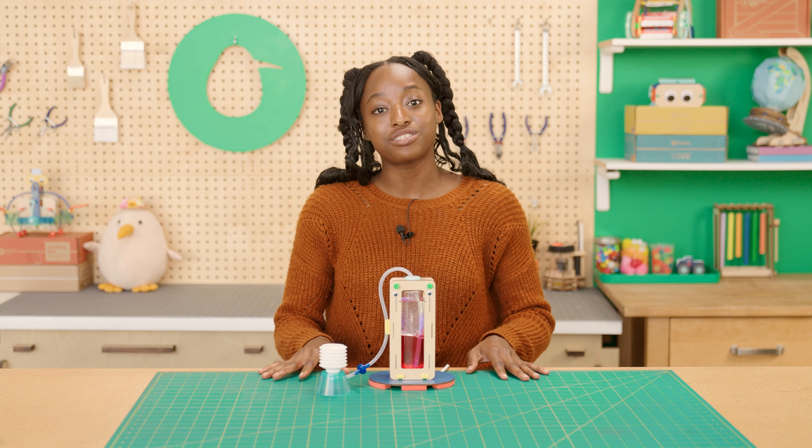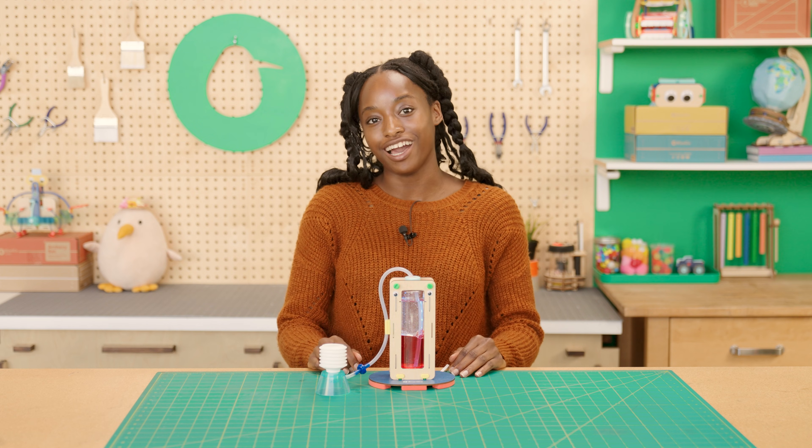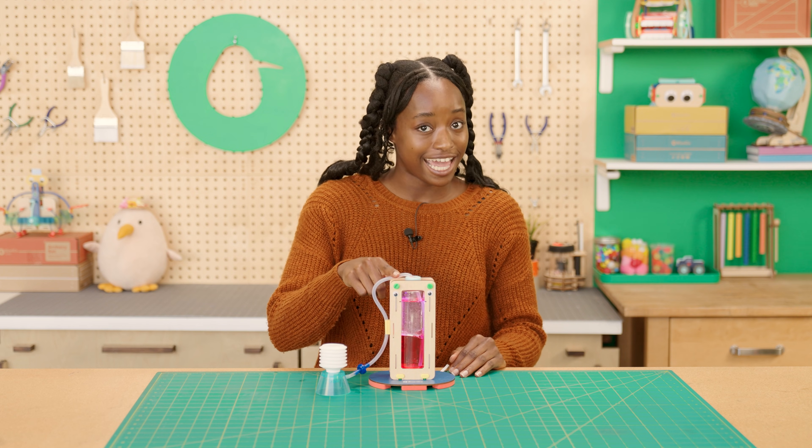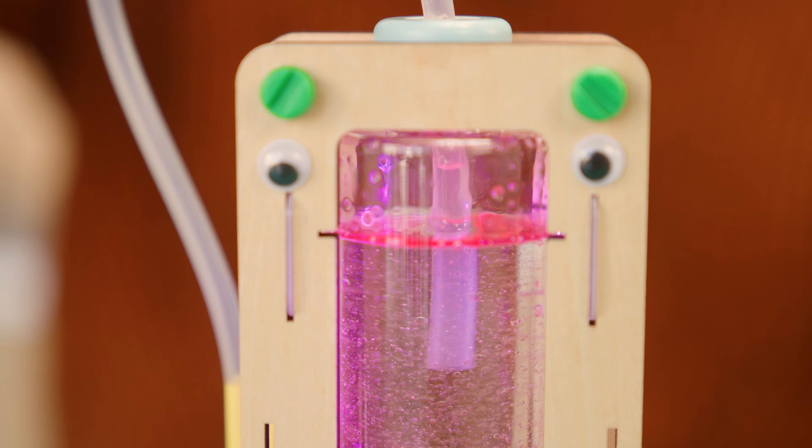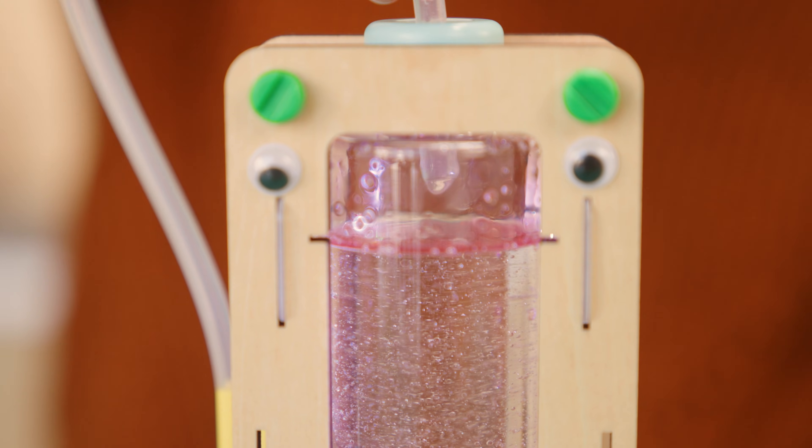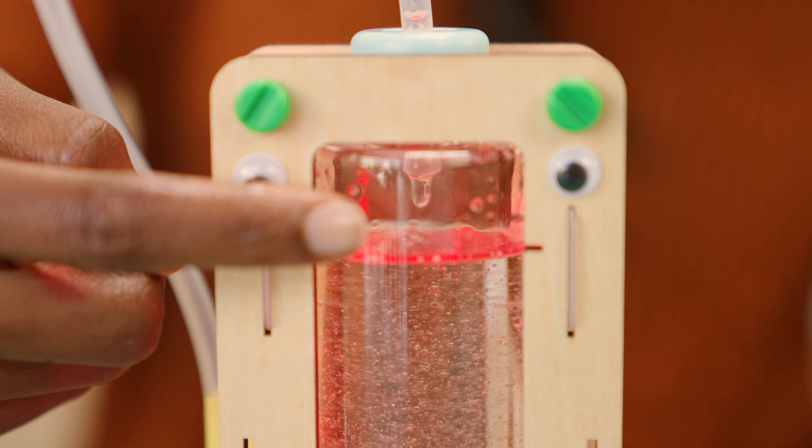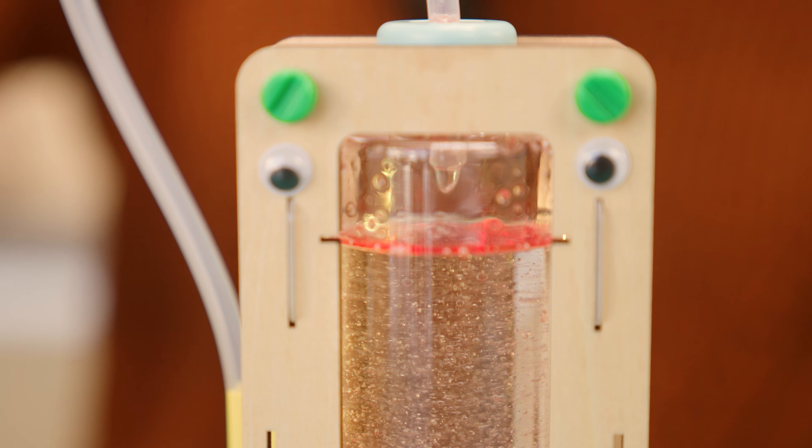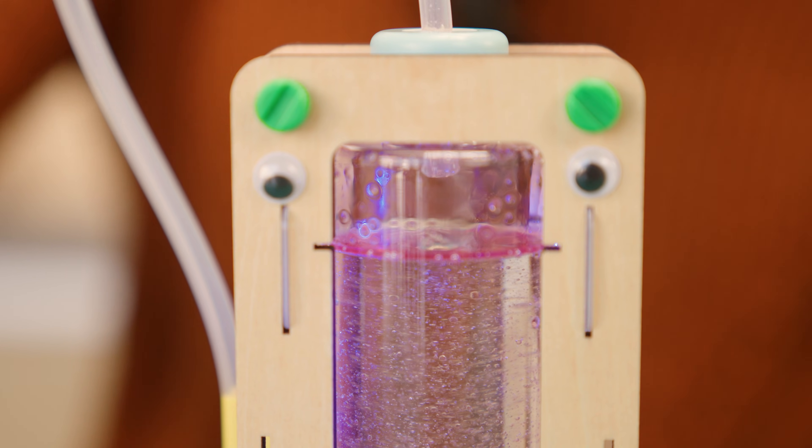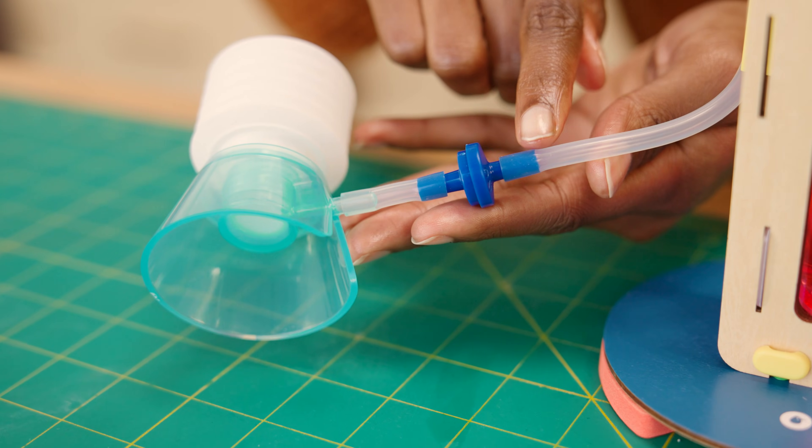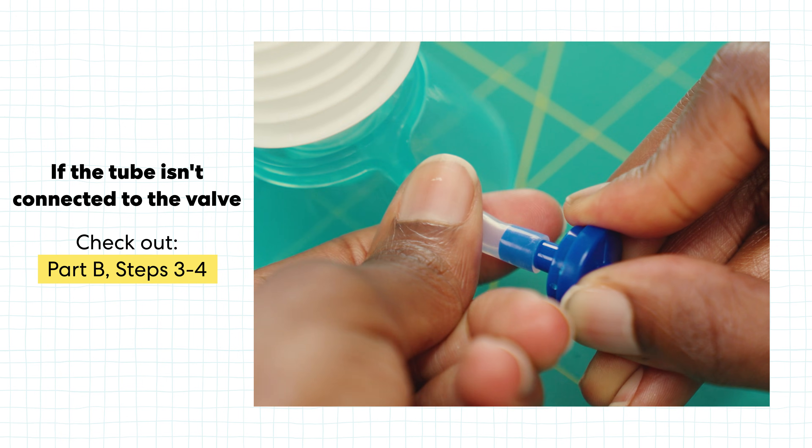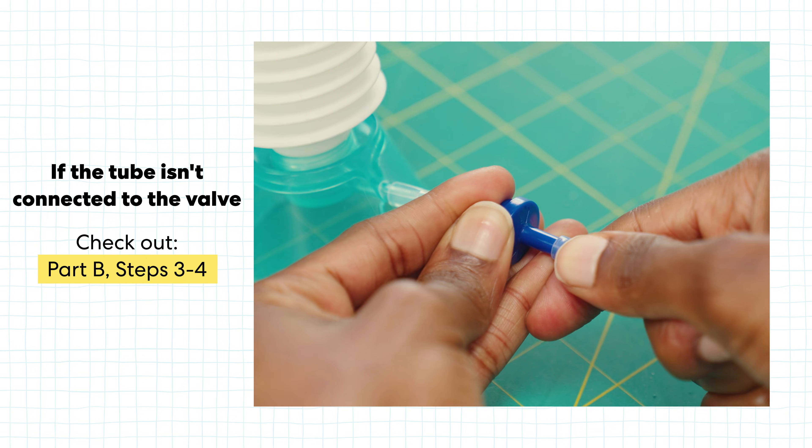Now, if you run into trouble as you start to play, don't worry, I've got you. If your tube is taking in liquid, pull the tube all the way above the liquid. And then give your bellow a few pumps to drain it out. And also, check to make sure that your tubes are correctly connected to your valve. You can check that out in Part B, steps three through four.